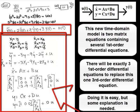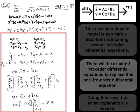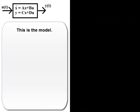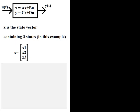Doing it is easy, but some explanation is needed. This is the model. X is the state vector containing three states. In this example, that's the state vector.